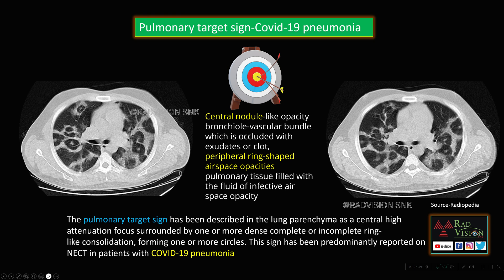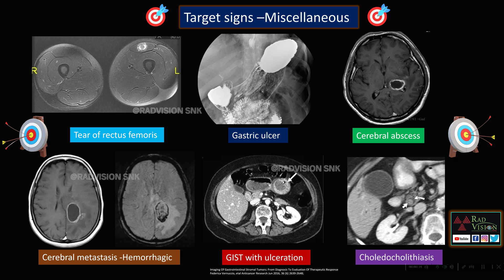Next: pulmonary target sign, which is classically seen in COVID-19 pneumonia. Here you can see there is a central bronchovascular bundle which may be occluded by exudate or clot, surrounded by peripheral ring-like opacities — pulmonary tissue filled with fluid or infected airspace opacity. The central bronchovascular bundle occluded by clot appears as the central nodule, and the peripheral consolidation represents an organizing pneumonia pattern classically seen in COVID-19 pneumonia.